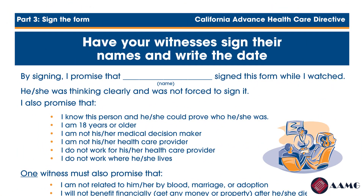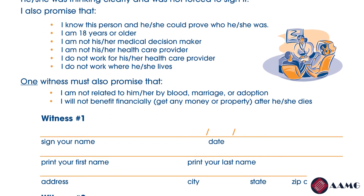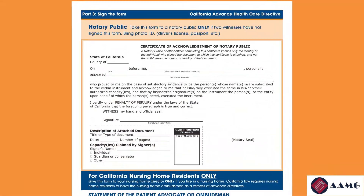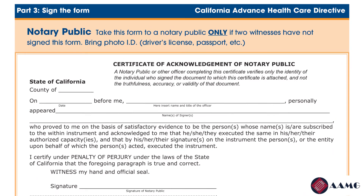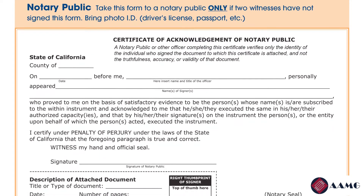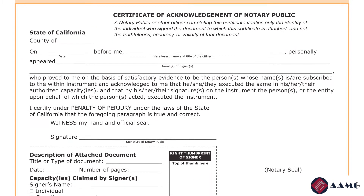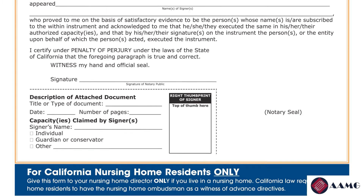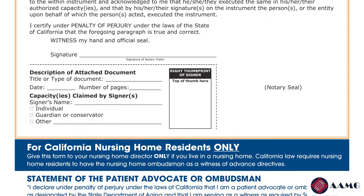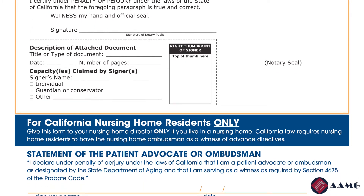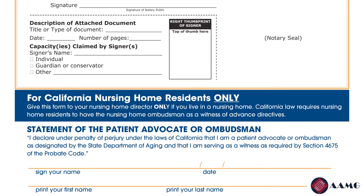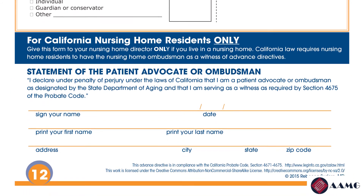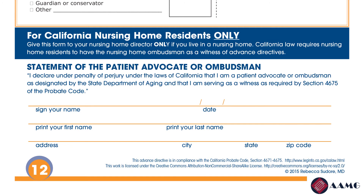Page eleven is where your witnesses sign their names and write the date. Have them fill in their signature, the date, first and last name, and their address. Page twelve is for a notary public — take this form to a notary public only if two witnesses have not signed the form with you. You will need to bring valid identification such as a driver's license or passport. A notary public may require a small fee. You can find notary services at locations like a UPS store. If you live in a nursing home, give this form to your nursing home director, as California law requires the nursing home ombudsman to serve as a witness.